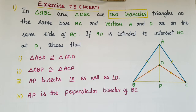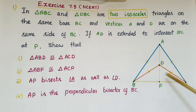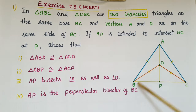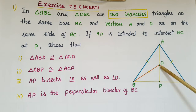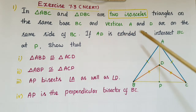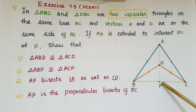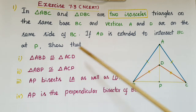Hello everyone. Today I am going to tell the solution of the first problem from Exercise 7.3 from NCERT Class 9. In triangle ABC and triangle DBC, these two triangles are two isosceles triangles on the same base BC, and vertices A and D are on the same side of BC. If AD is extended to intersect BC at P, then...